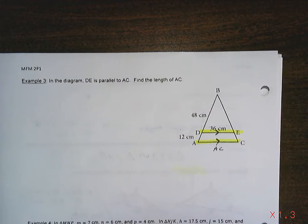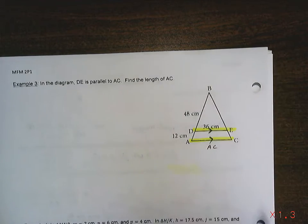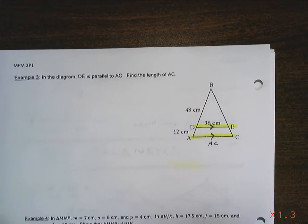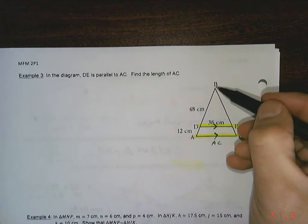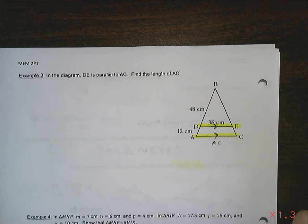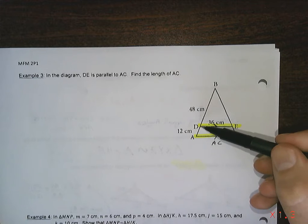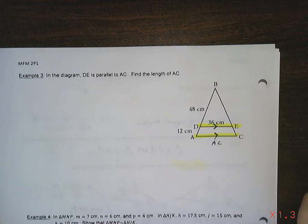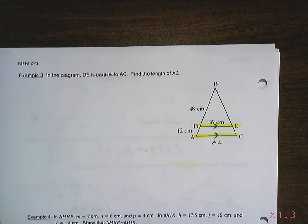When we see something like this the first thing that we should notice is that there's two triangles there. There's the big triangle ABC and there's a smaller triangle DBE. Looking at those triangles it should become obvious that they look to be about the same shape but they're different sizes. So what we want to do is prove that. We want to prove that they're similar.